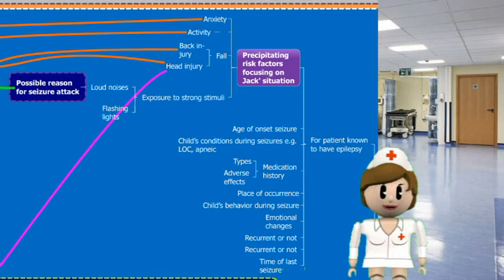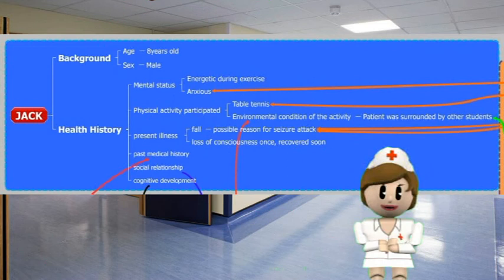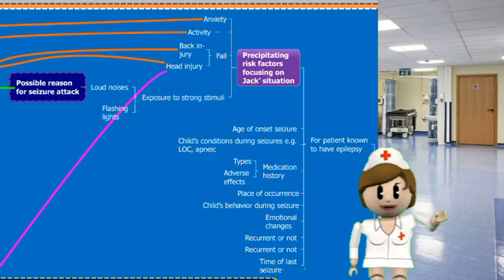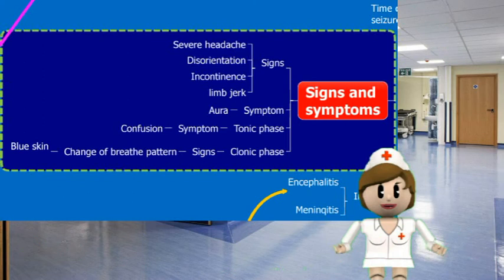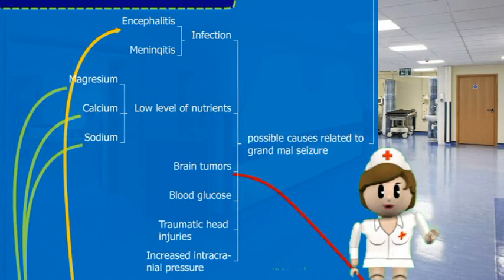As we can see from Jack's condition, he fell while feeling anxious and was surrounded by many students producing loud noises. There are interlinks between Jack's conditions and the precipitating factors from the assessment part — these could be possible reasons for inducing seizure. We should also assess if there are any signs and symptoms related to grand mal seizure, as well as any possible causes, because this will be useful in designing a care plan for Jack.